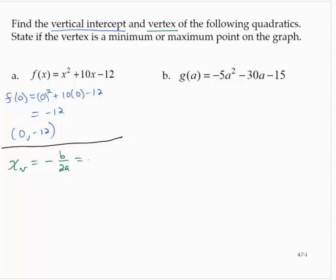So that would be negative 10 over 2 times 1. I made substitutions for b and a. 10 over 2 is 5, so negative 5.